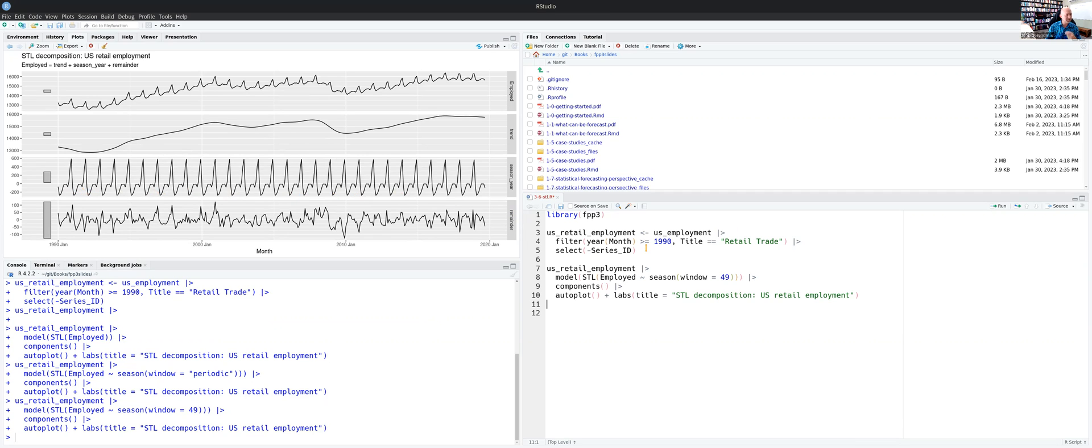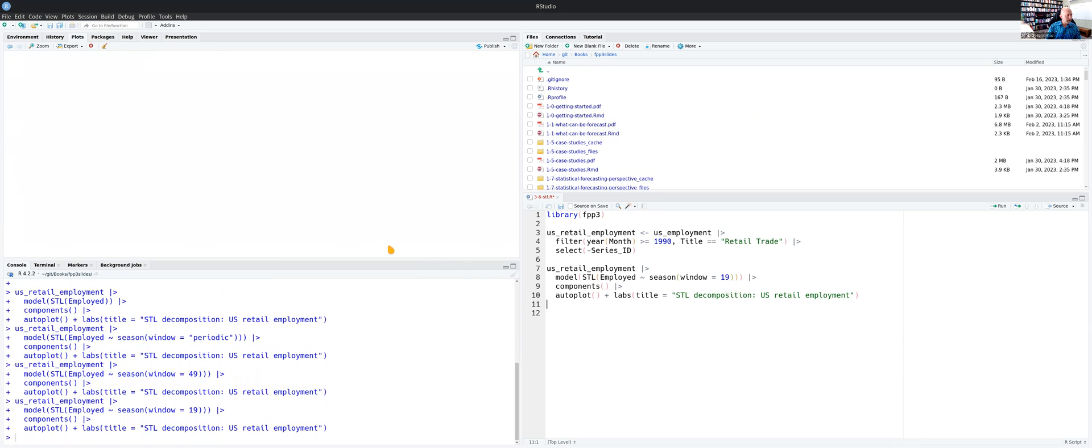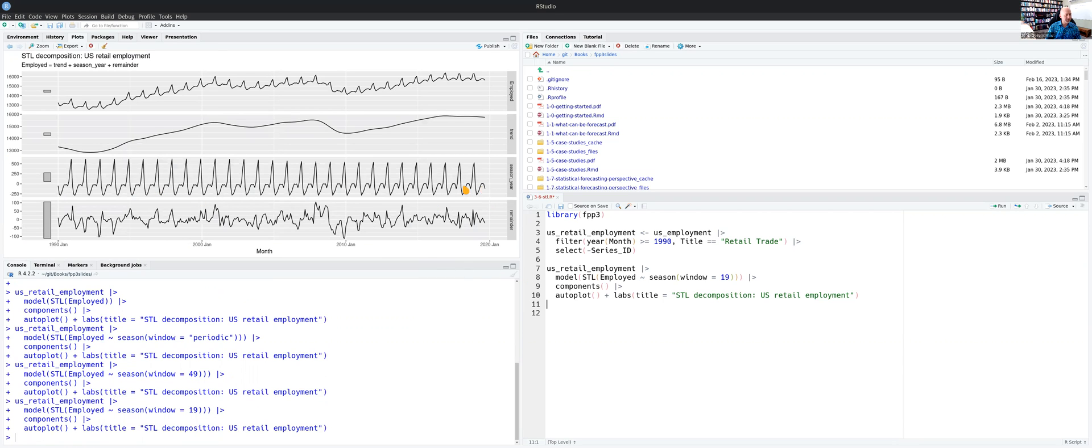You can hardly see the difference across there. But if I make this a smaller number, then we get a little more variation. You now see that at the end of the series, the end of the seasonal component down here is now looking quite different from the seasonal component at the start.